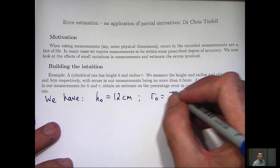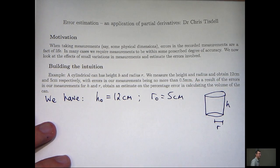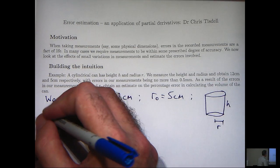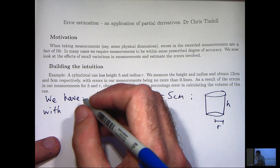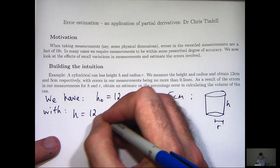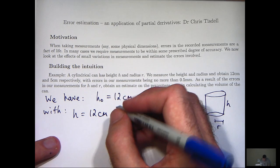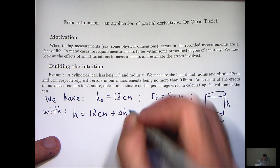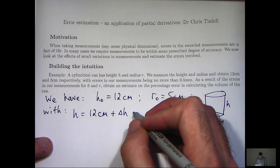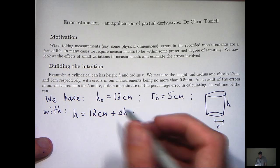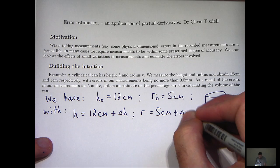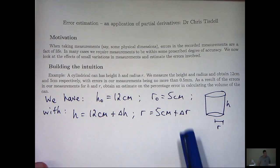Well, h₀ is going to be our recorded measurement for the height, r₀ is our recorded measurement for the radius. And because we may have some errors involved, the true height is our measurement, 12 cm, plus some error. Now, this could be negative, it could be positive. We don't exactly know what this is.